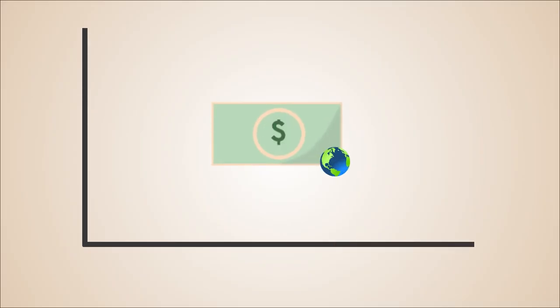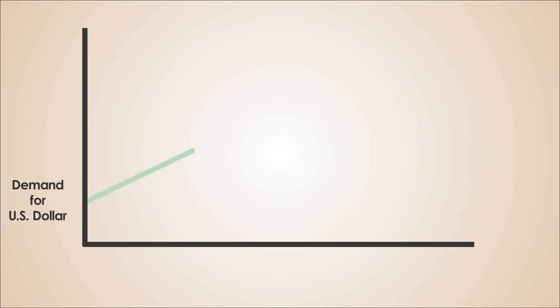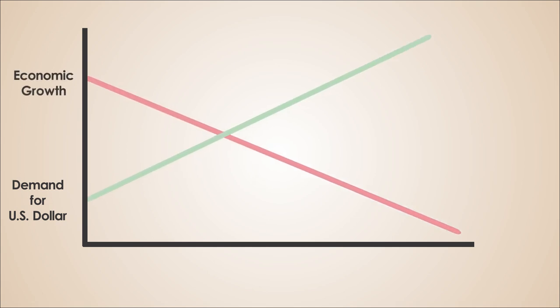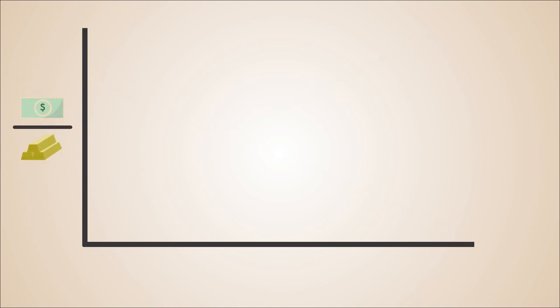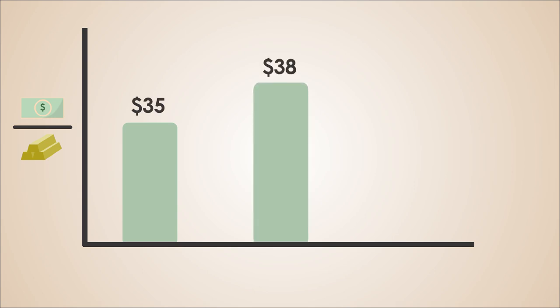Since the US dollar was a global currency, foreign investment was causing prices to rise, whereas domestically the US was in a contractionary period in their business cycle. In an effort to combat stagflation, President Nixon began quietly revaluing the dollar to gold, initially at $38 per ounce of gold and then to $42 per ounce.